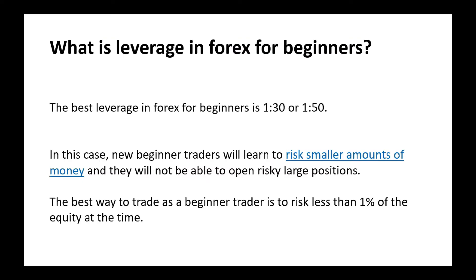What is the best leverage in forex for beginners? The best leverage in forex for beginners is 1 to 30 or 1 to 50. In this case, new beginner traders will learn to bring in smaller amounts of money and will not be able to open risky large positions. So if you're a beginner trader, try to put very small leverage — just to push yourself and forbid yourself from using large positions.